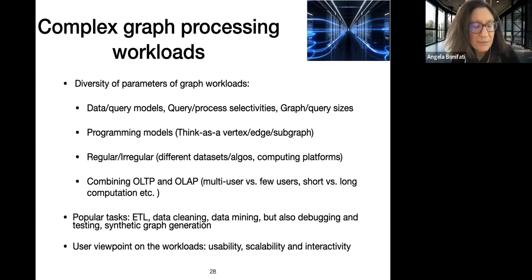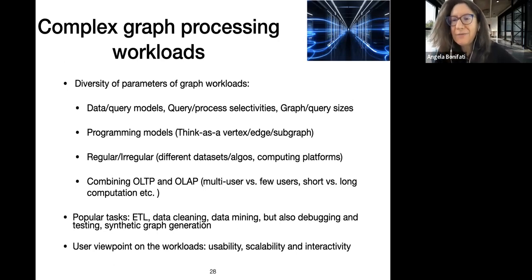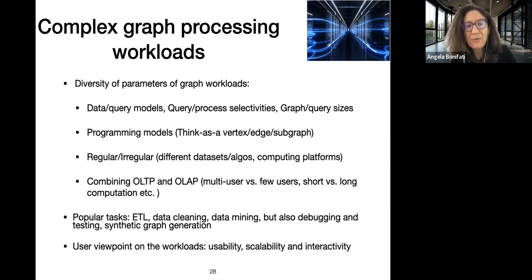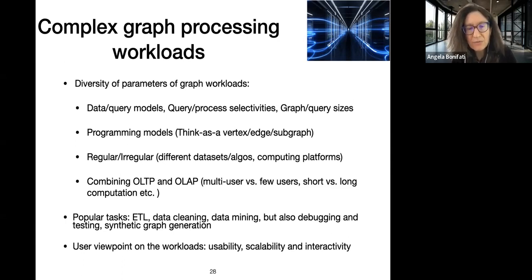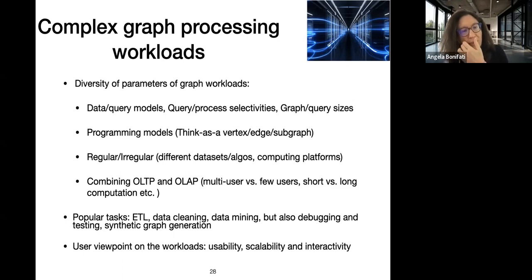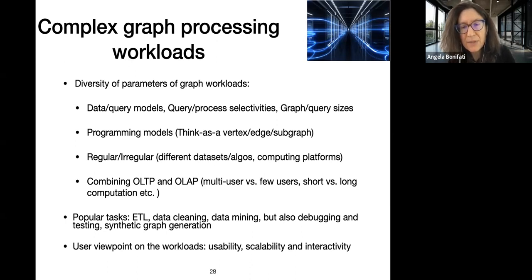Graph and query sizes also play a role: a small query with two nodes in a basic graph pattern is very different from a query with 65 triples. For complex graph workloads you must also consider programming models — think-like-a-vertex, think-like-an-edge, or think-like-a-subgraph — for distributed computation. For benchmarking, you put many query and process workloads together and must characterize further parameters: whether workloads are regular or irregular, what datasets, algorithms, and computing platforms are used.